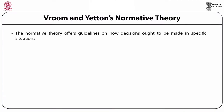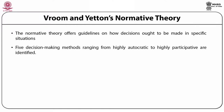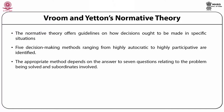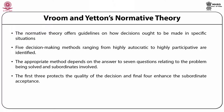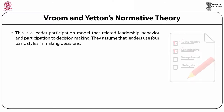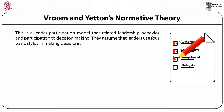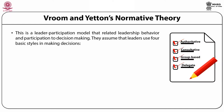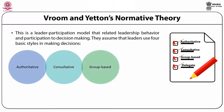The normative theory offers guidelines on how decisions ought to be made in specific situations. Five decision-making methods ranging from highly autocratic to highly participative are identified. The appropriate method depends on answers to seven questions relating to the problem and the subordinates involved — the first three protect the quality of the decision and the final four enhance subordinate acceptance. Leaders use four basic styles in making decisions: authoritative, consultative, group-based, and delegative.